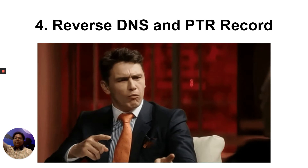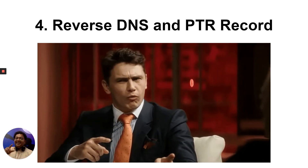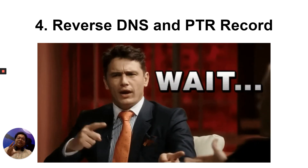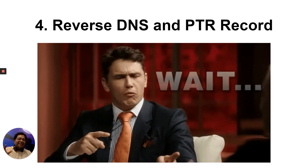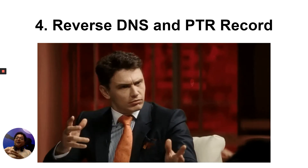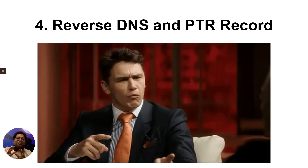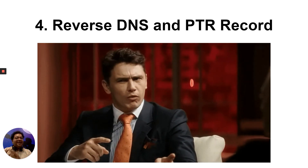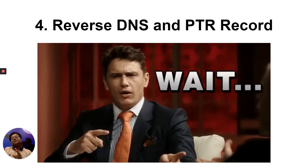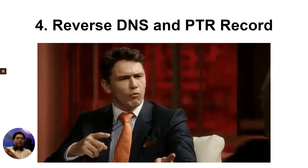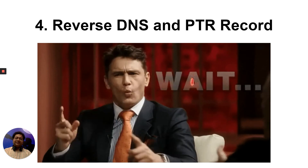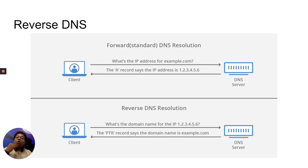The fourth factor is reverse DNS and PTR records. Reverse DNS and PTR records are tricky terms, not very popular among developers, but they play a very important role in email delivery. Not having these can make your emails land in spam. You already know DNS maps a domain name to an IP address — this is called forward DNS. Reverse DNS is the opposite: it maps an IP address to a domain name.